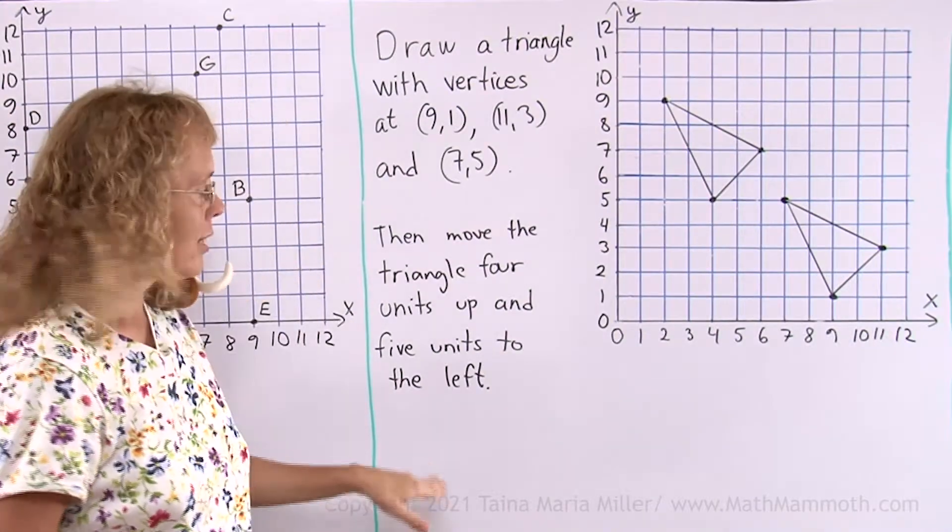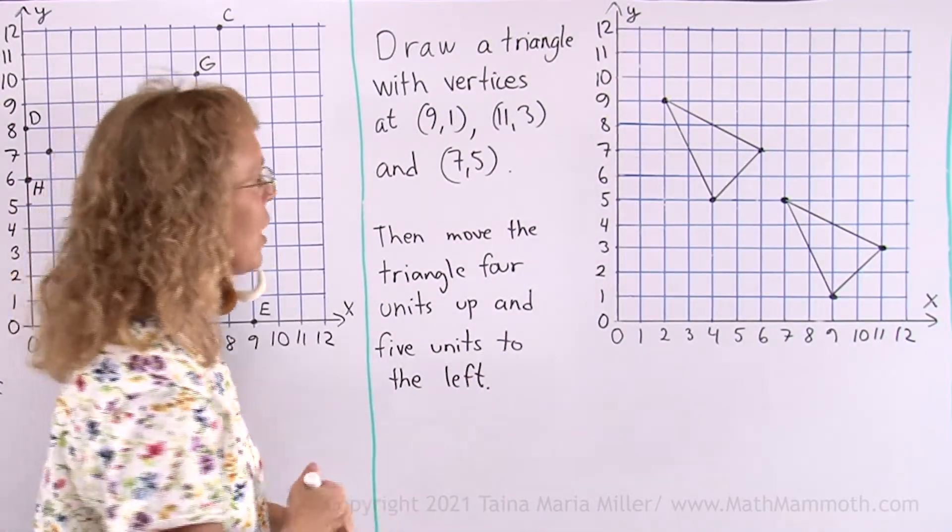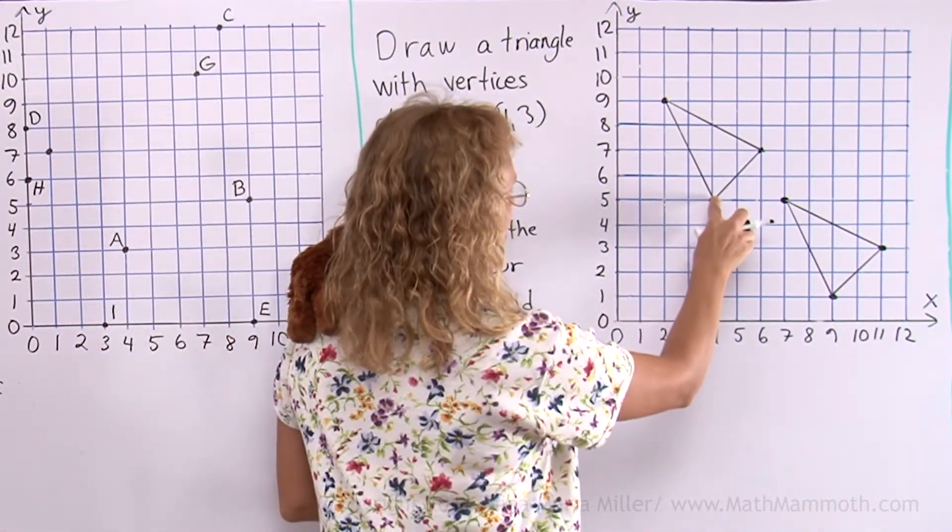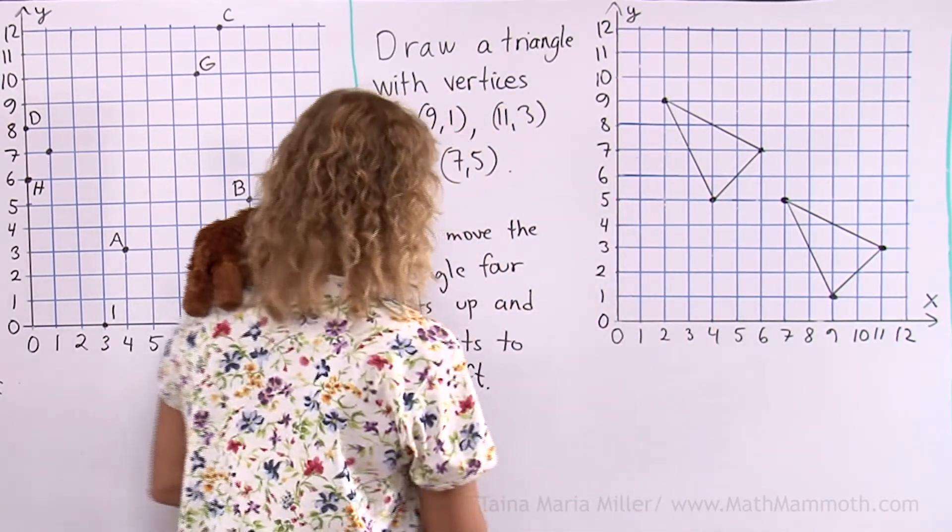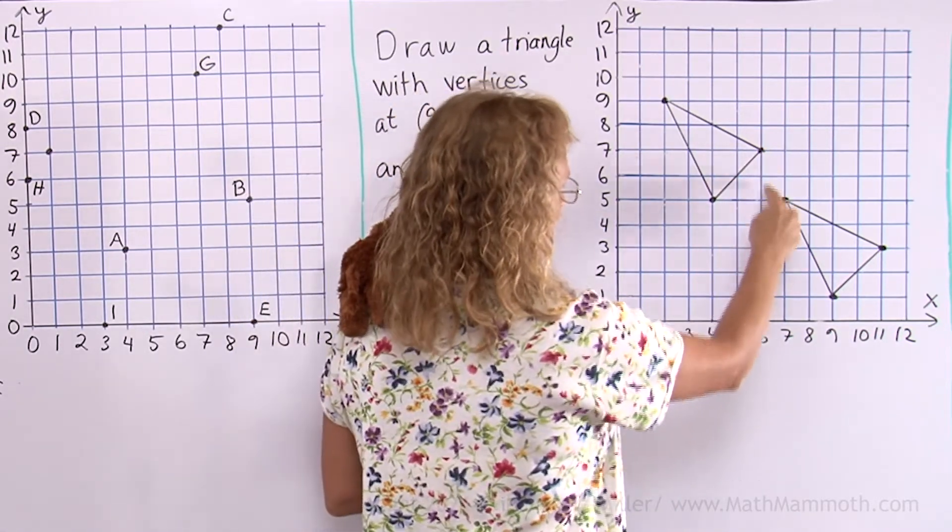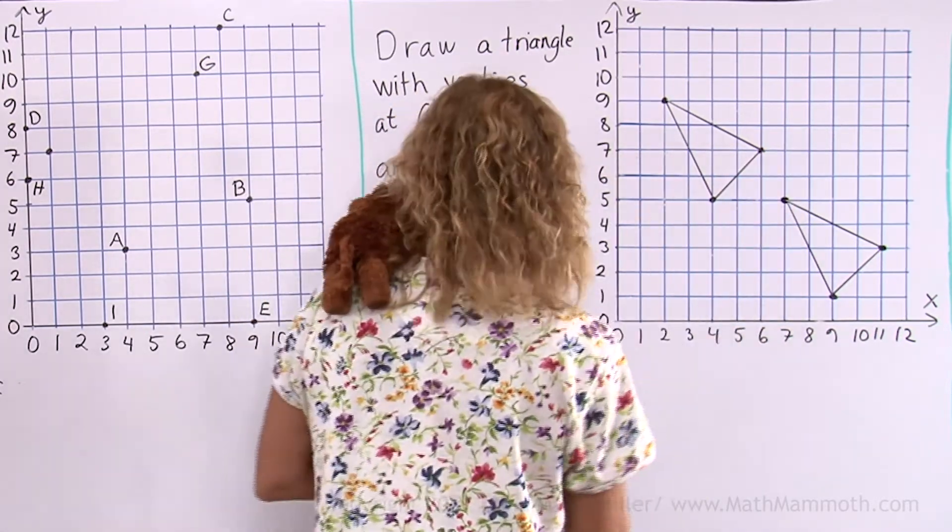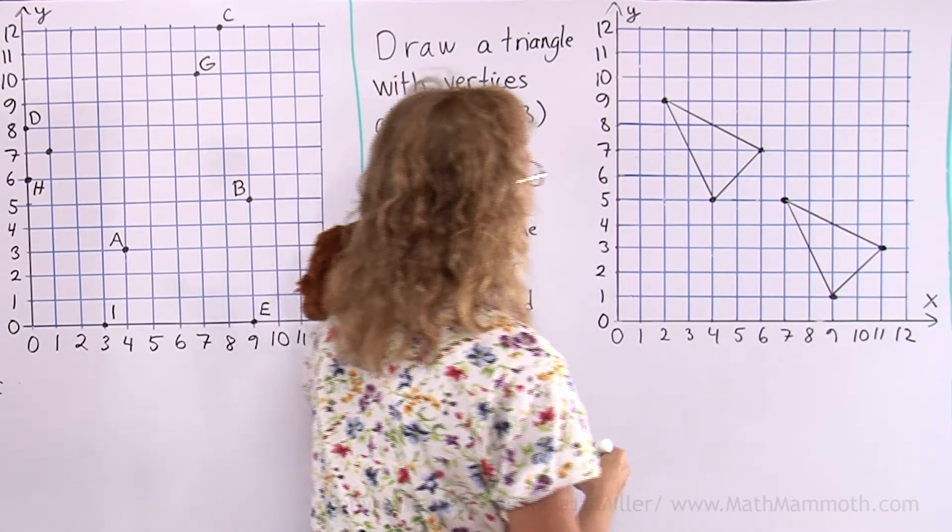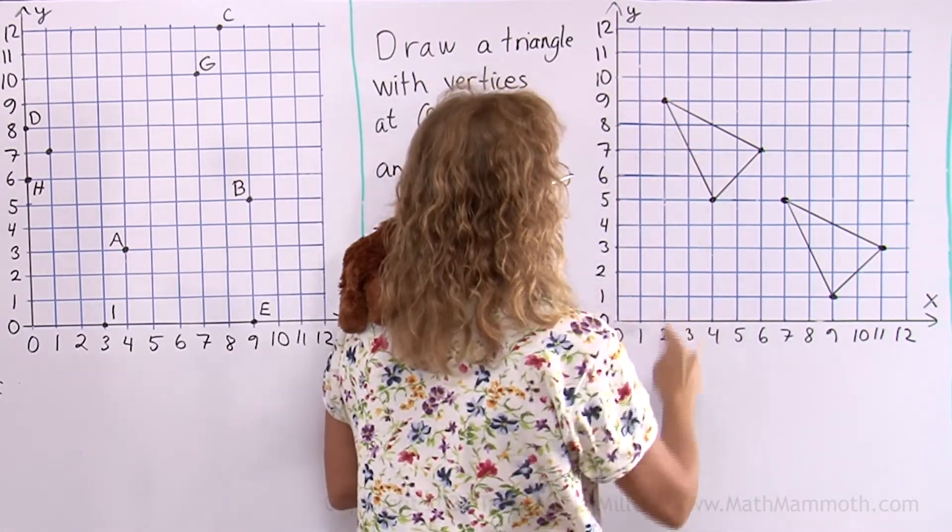Let me now write down the vertices of that new triangle. This one here, look down first: 4 and 5. Then this one: 6 and 7. The last vertex is 2 and 9.